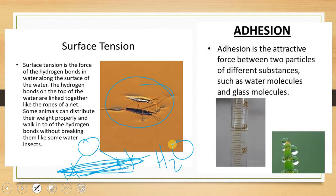For example, this animal can distribute its weight — here, here, here, and here. So it can distribute its weight and will not fall into the water. That's what surface tension means. Surface tension is really important for the water strider. If there were no surface tension, the water strider would not be able to live on the surface of the water — it would fall in. We need surface tension for this kind of animal to survive.